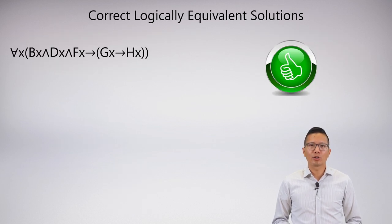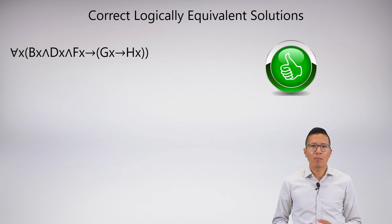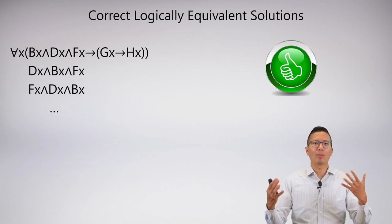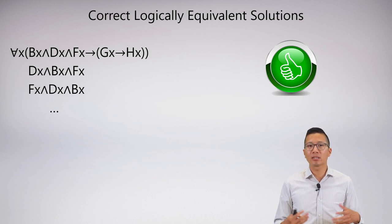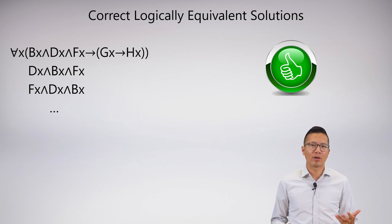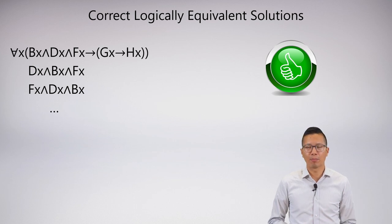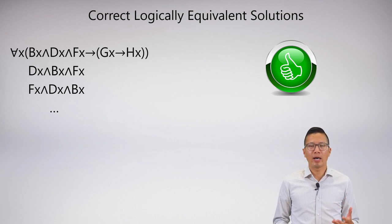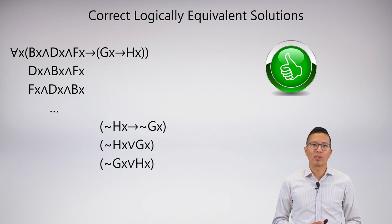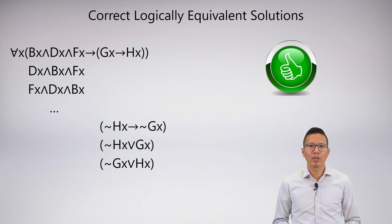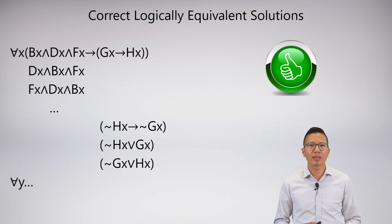There are lots of correct logically equivalent solutions available. We can make lots of trivial variants: I can scramble the order of the conjunctions in the antecedent, because that order doesn't really matter. I can also change how I handled the 'only' — using a contrapositive or a disjunction, since we know these are all logically equivalent. Lastly, another trivial logically equivalent solution is using a different variable — there's nothing forcing me to use X.